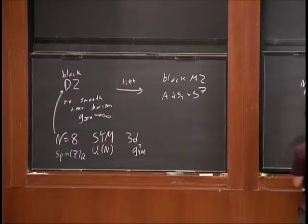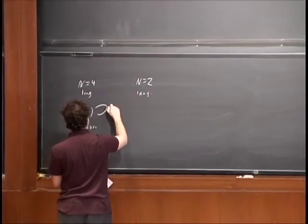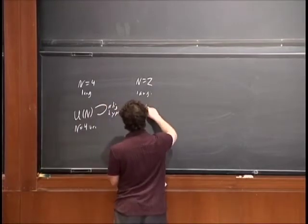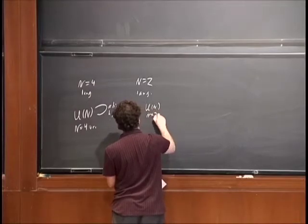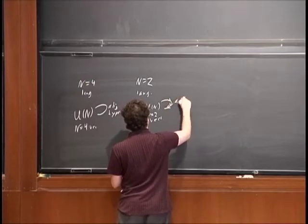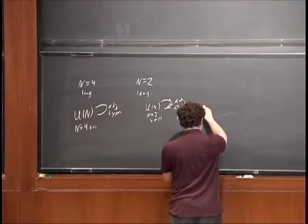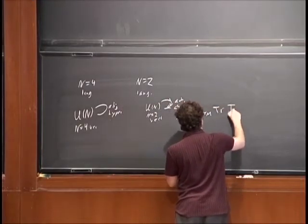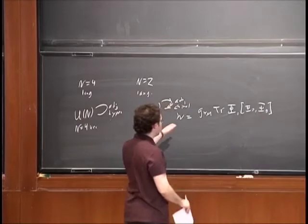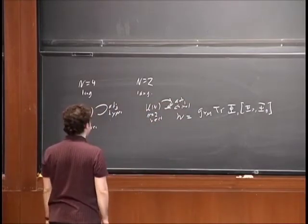In N=4 language, it's a U(1) theory with an N=4 vector coupled to a single adjoint hypermultiplet. In N=2 language, it's an N=2 vector coupled to three adjoint chiral fields, with the N=2 superpotential given by the trace of phi_1 times the commutator of phi_2 with phi_3 — basically the dimensional reduction of the N=4 theory in four dimensions.